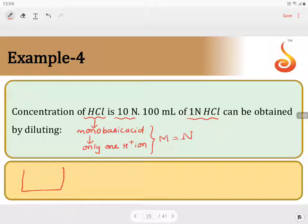So you have taken a solution which is 10 normal, you have added water, which is called dilution. When you have added water, this 10 normal solution has become 1 normal solution which is of volume 100 mL.